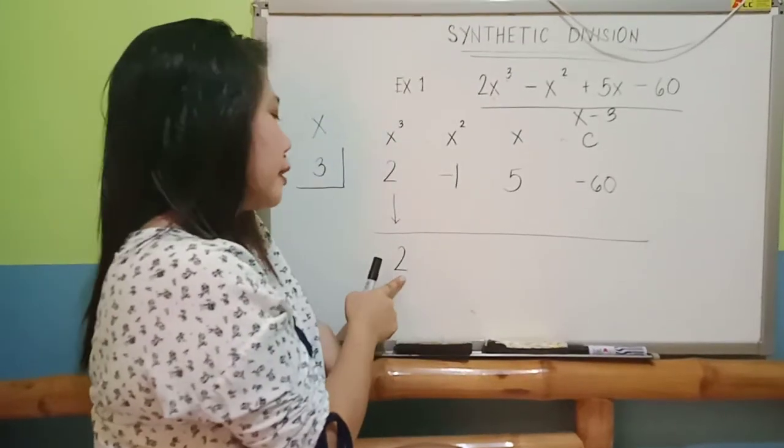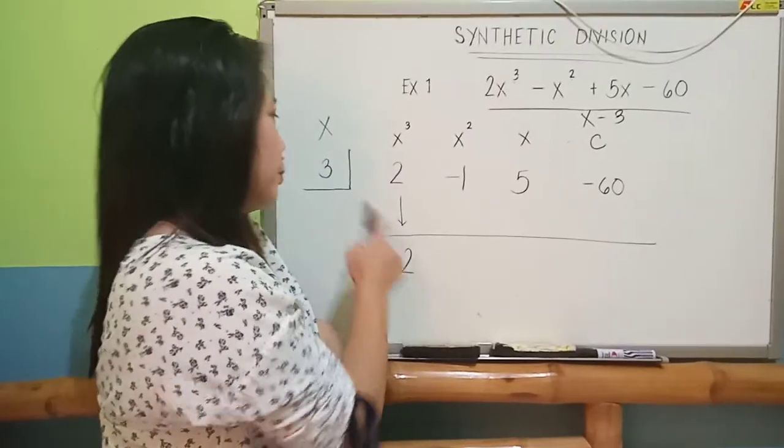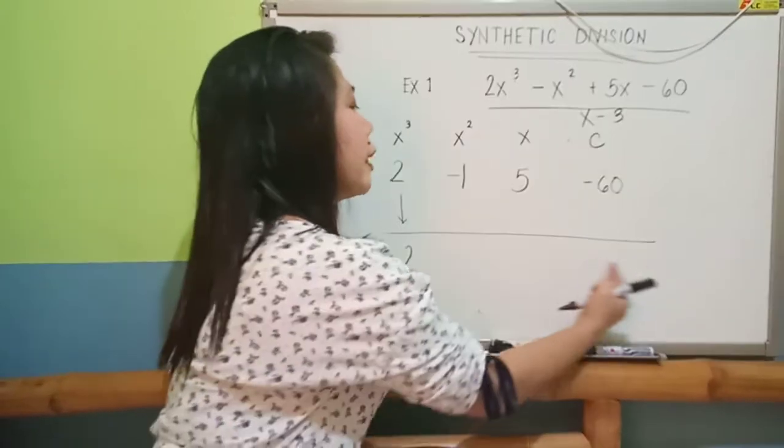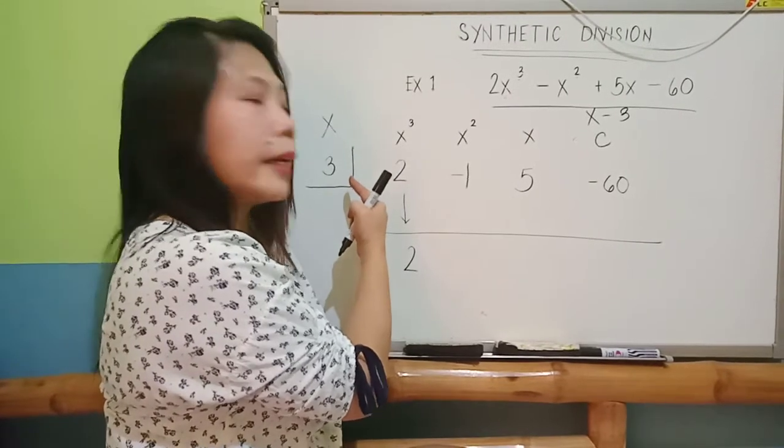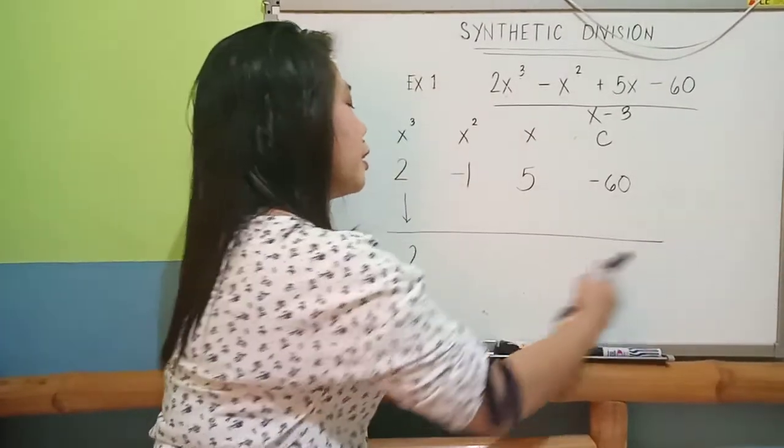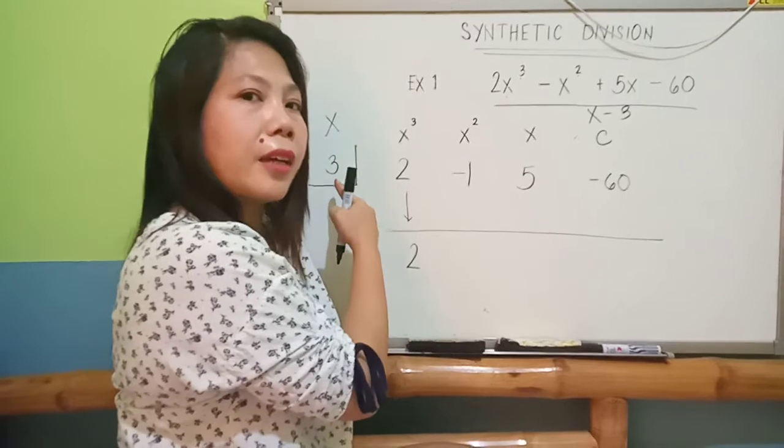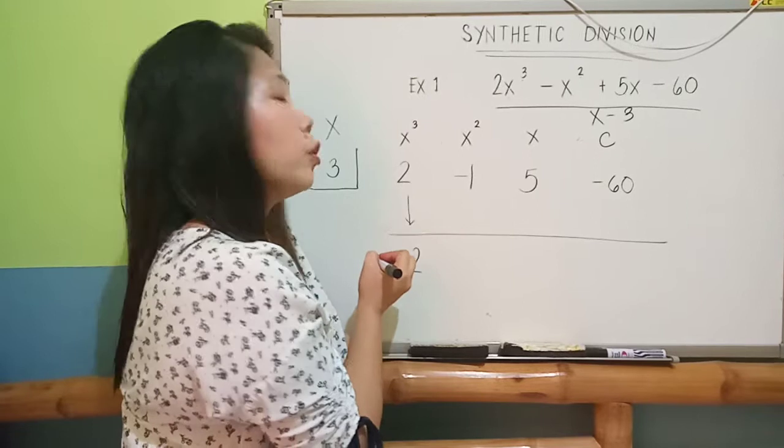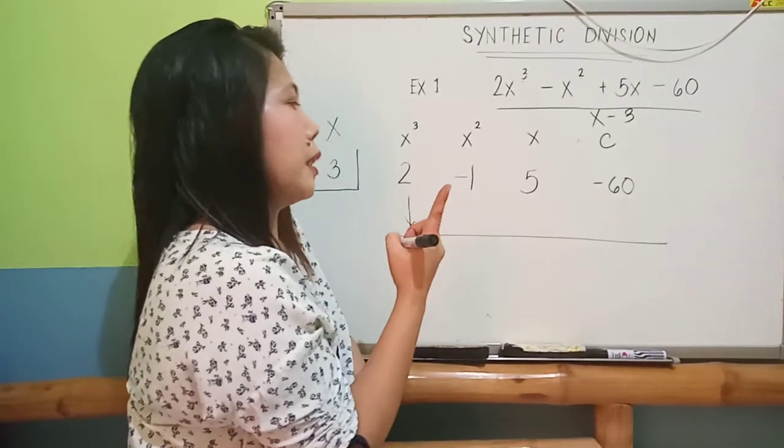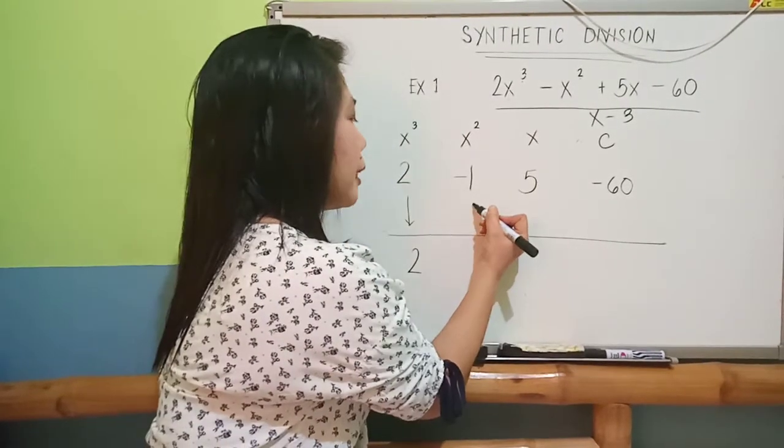The next is, you multiply 2. You always multiply whatever the value here. You multiply it with 3. Again, whatever the value here, you have to multiply it by 3. 2 times 3 would be 6. So, where are you going to place your 6? You're going to place it here.